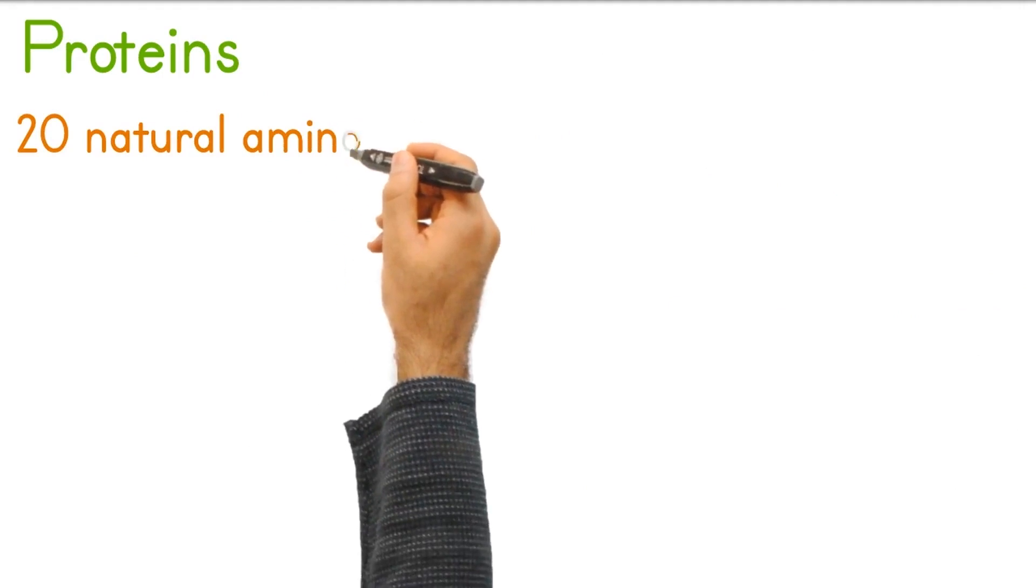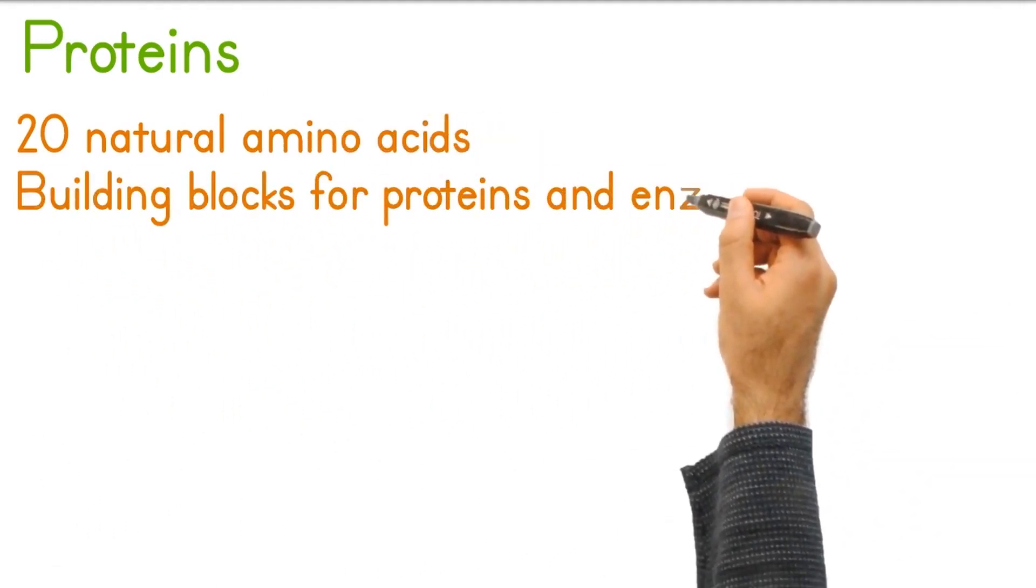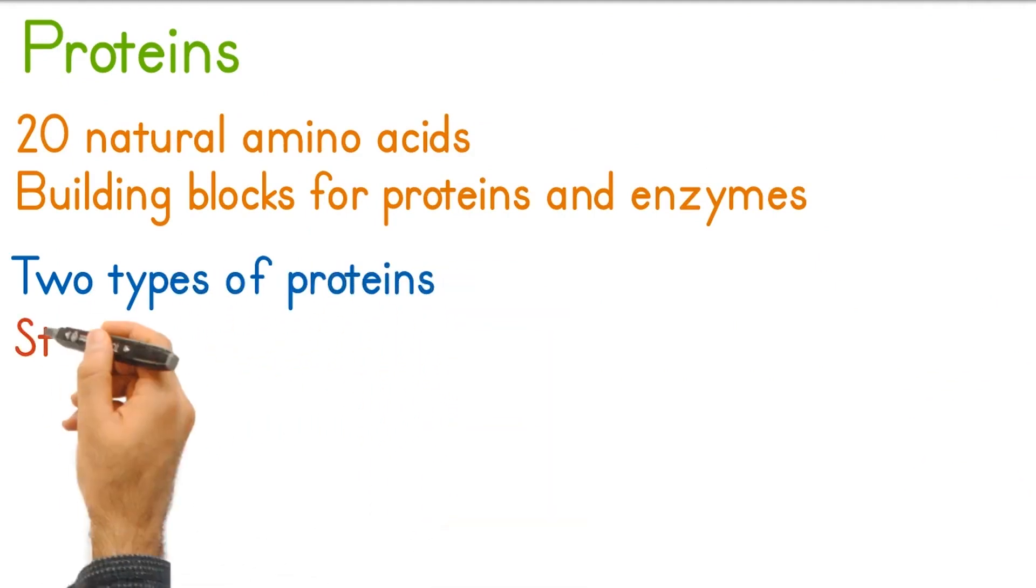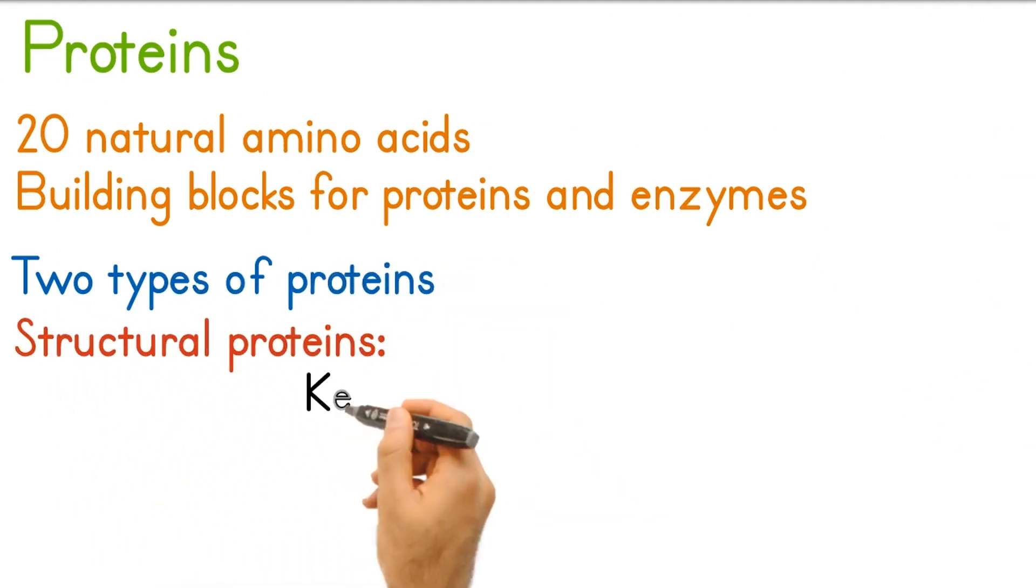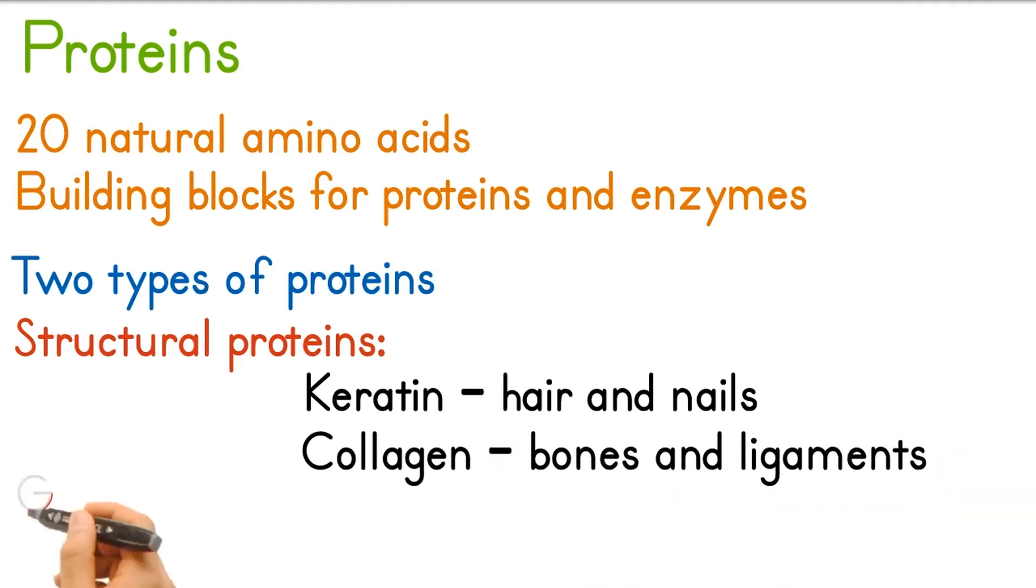There are 20 natural amino acids. They are the building blocks for proteins and enzymes. There are two types of proteins. Structural proteins like keratin in hair and nails and collagen in bones and ligaments.